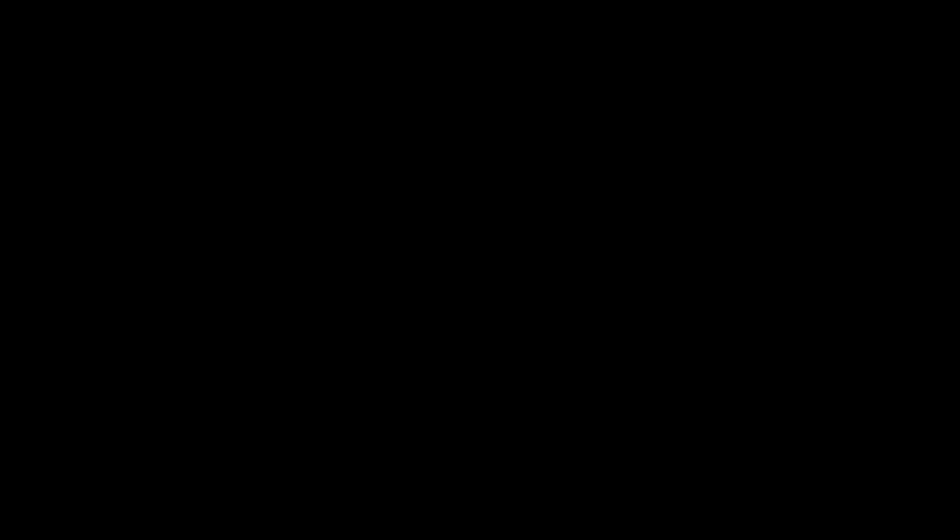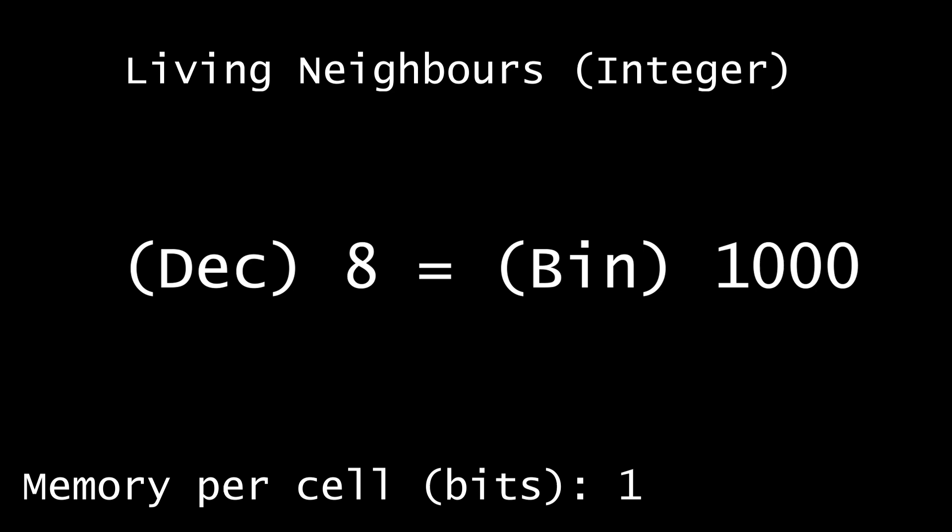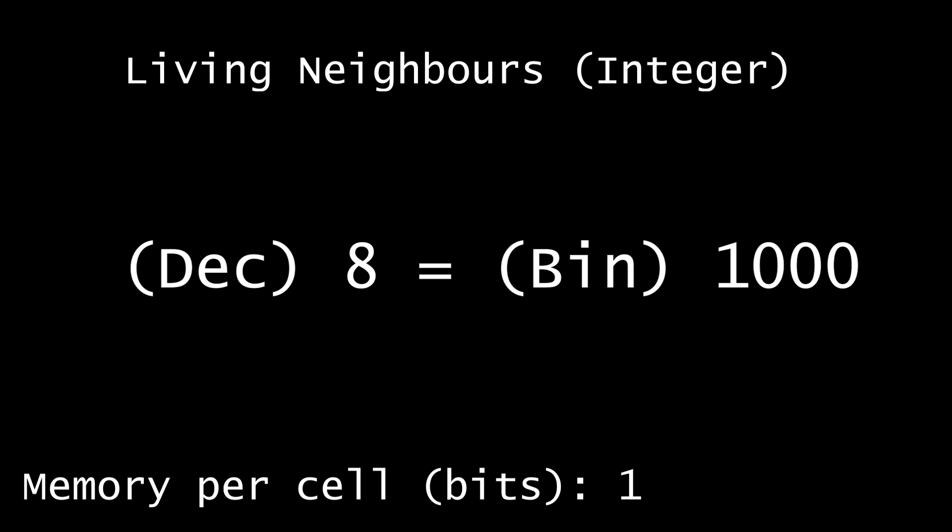The cell's alive or dead state is just a boolean type — either a 1 or a 0 — so we can store it in a single bit of memory. The number of living neighbour cells will be an integer that can have a maximum value of 8, since a cell can have a maximum of 8 living neighbours. In binary, 8 is represented by 1000, and hence we need 4 bits of memory to store the number of living neighbours for each cell. Therefore, in total, we need just 5 bits of memory for each cell.